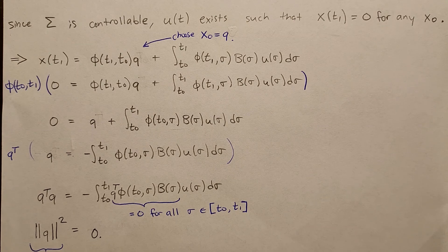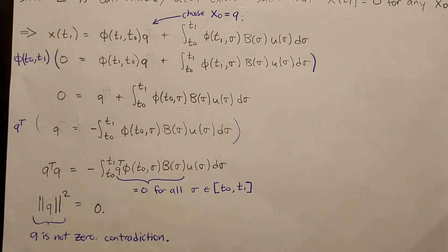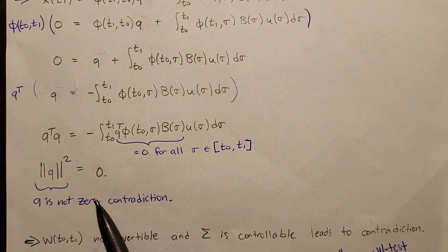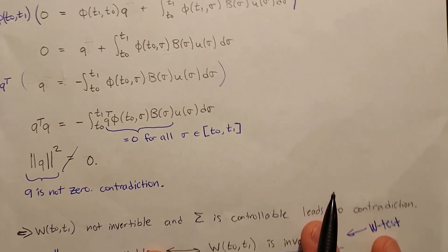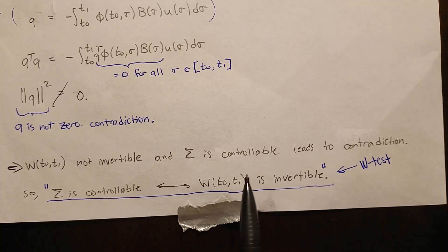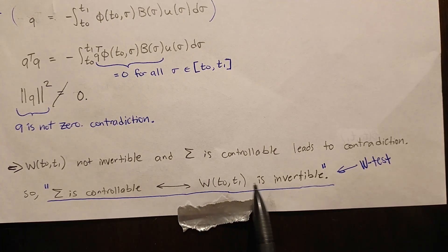That's a problem: Q^T Q equals the squared norm of Q, which is positive since Q is non-zero. So a positive number equals zero — that's a contradiction. We've shown that the Gramian being not invertible and the system being controllable is a contradiction. Therefore, the W test states that sigma is controllable if and only if the Gramian is invertible. Showing the Gramian is not invertible proves the system is not controllable, and vice versa.